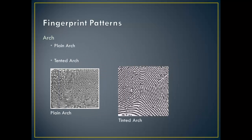Arches are ridges that enter the print from one side and leave out the other side. There are two distinct types of arches: plain and tented. The plain arch has a wave-like pattern similar to a rolling hill — the opposite of being on a high mountain peak. The tented arch shows a sharp spike at the center or top of the arch, like that high mountain peak.